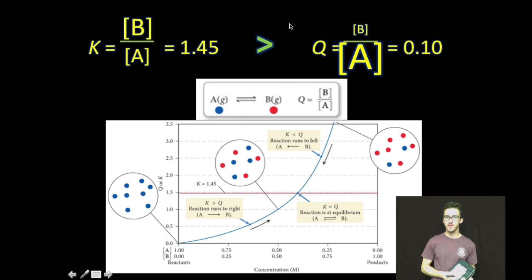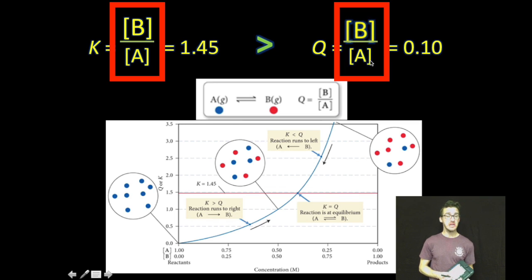What's going to happen? Well, we're going to shift now to the right. We're going to form more products in order to reestablish equilibrium. So notice again, forming more products, using up our reactants in order to establish those equilibrium concentrations.